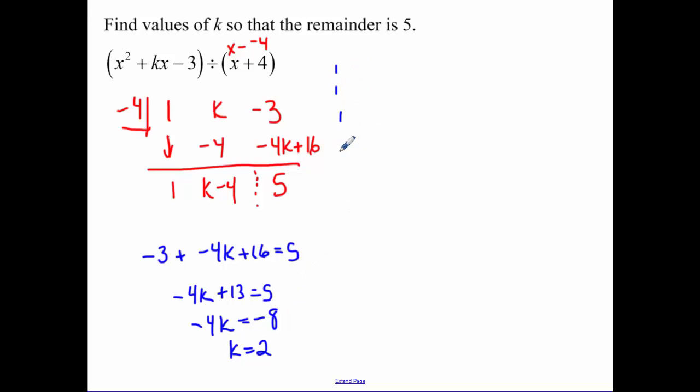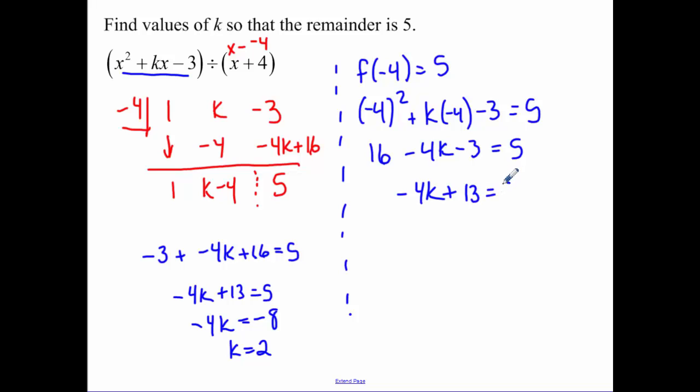Another way you could have done this is using the idea that our function evaluated at negative 4 has to equal 5. So negative 4 squared plus k times by a negative 4 minus 3 has to equal 5. So I have 16 minus 4k minus 3 has to equal 5. This math looks super familiar, and I got 2 both ways that I did it.